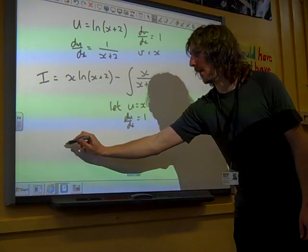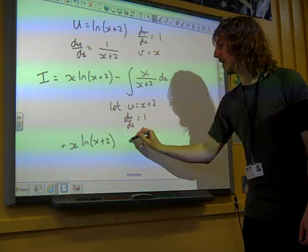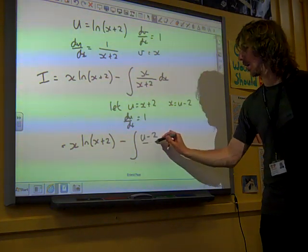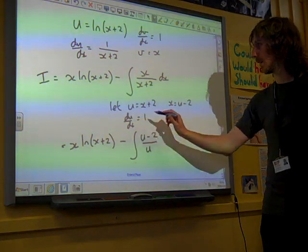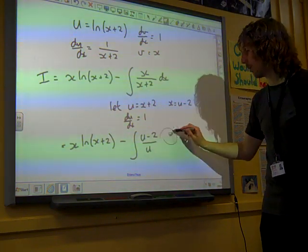So if we do the substitution then, our integral now, we've still got that bit at the start. But this is where we're integrating u minus two over u, and du equals dx, so we can swap that straight away for du.